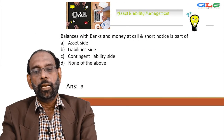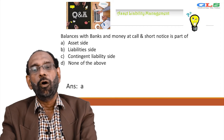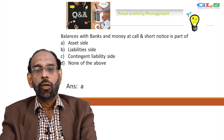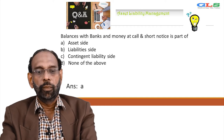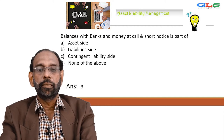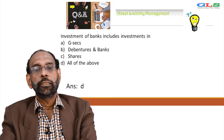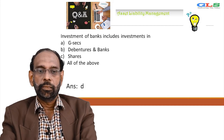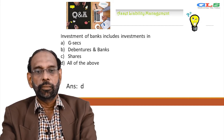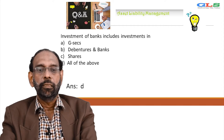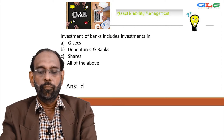Balances with banks and money at call and short notice is part of — A: asset side, B: liability side, C: contingent liability side, D: none of the above. The answer is A, that is the asset side. Investment of banks include investment in GSECs, debentures and bonds, shares — all of the above. The answer is D, that is all of the above.